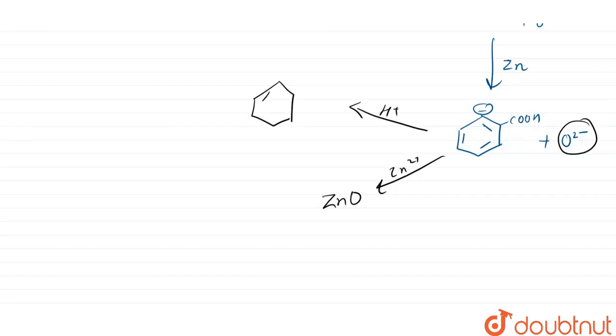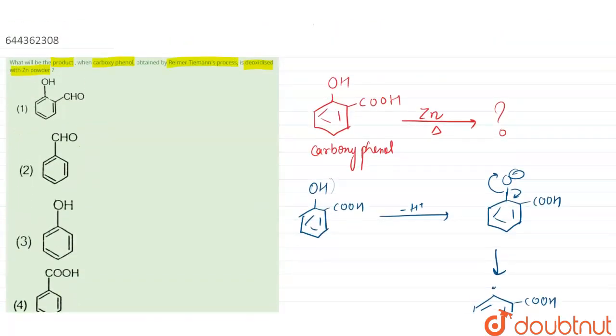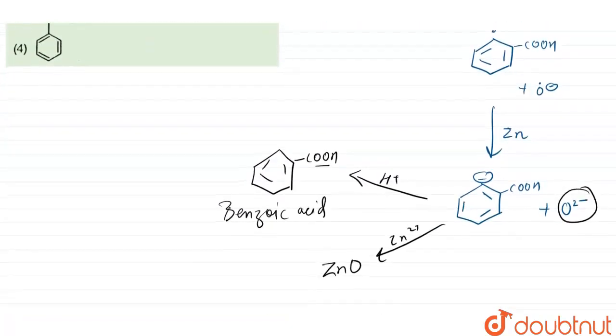So this will be benzene with carboxylic acid. This is our benzoic acid. So this is how when our carboxyphenol is treated with zinc and heating process, it reduces carboxyphenol to benzoic acid by this mechanism.